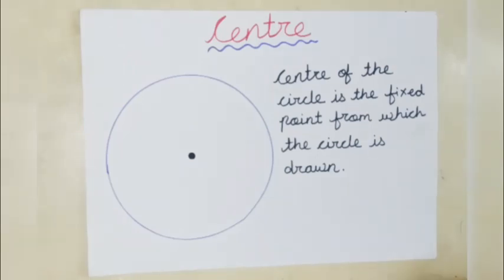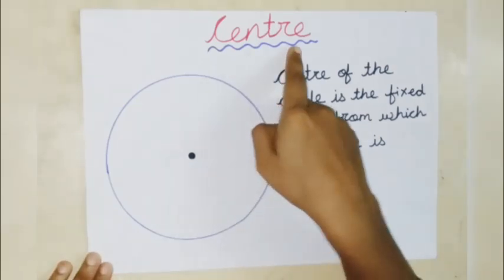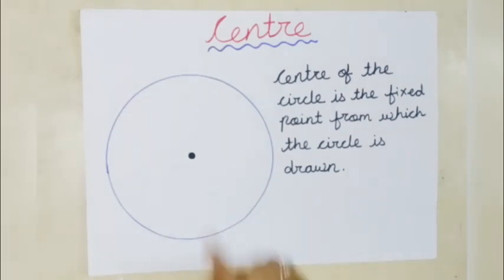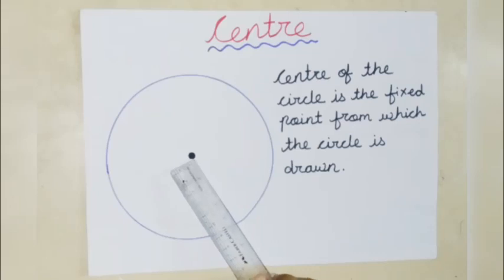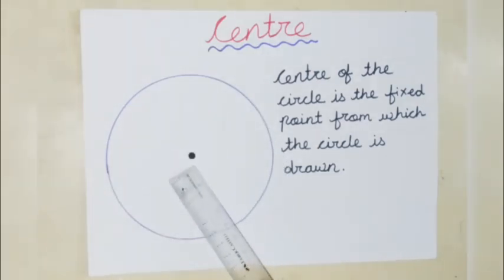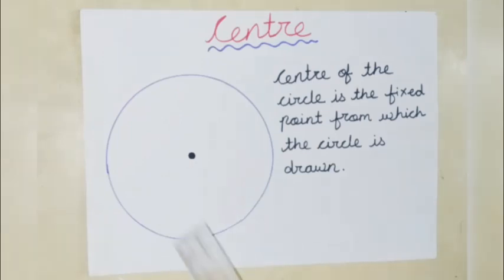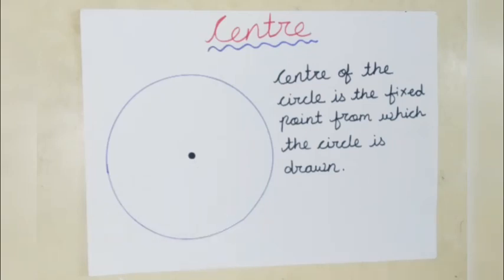I already showed you about the center. The center of a circle is the fixed point from which the circle is drawn. Where we put the metal tip, that is the center of a circle. By using the center of a circle, we draw a circle.